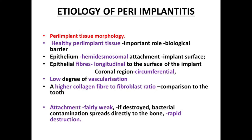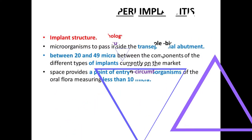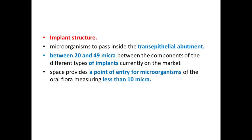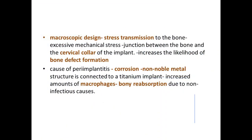This leads to rapid destruction after bacterial contamination, which spreads directly to the peri-implant bone. Micro-organisms pass inside through the trans-epithelial abutment. The space between the components of the implant ranges from 20 to 49 microns, but the space required as an entry point for micro-organisms is less than 10 microns. With the macroscopic design, transmission of mechanical stress is very excessive between the bone and the collar of the implant, increasing the likelihood of bone defect formation.